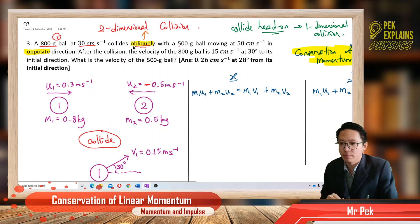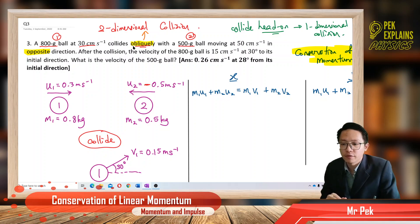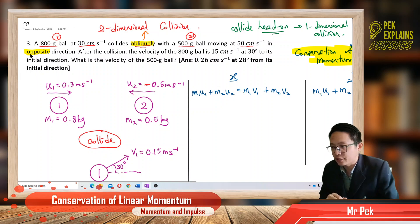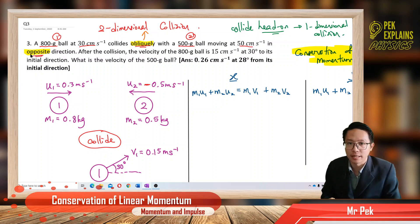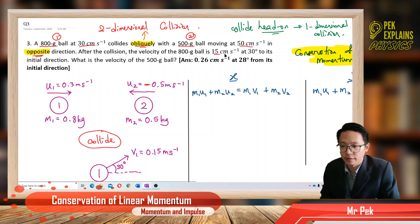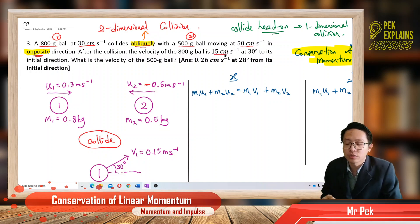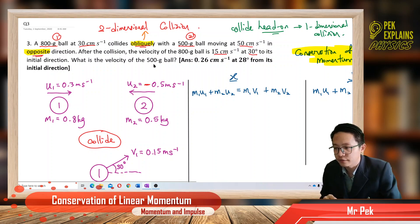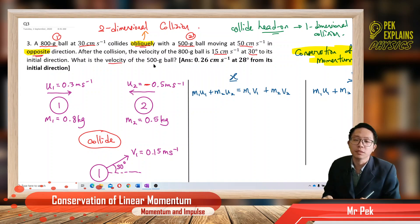We also have the mass of the second ball, the 500-gram, denoted as 2, and the initial velocity for the second ball in the opposite direction — that's very important. Opposite direction means you need to put a negative sign on the velocity. After the collision, the velocity of the 800-gram ball is 15 cm per second, so we have the final velocity and the direction of 30 degrees. We want to find the final velocity of the second ball.